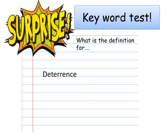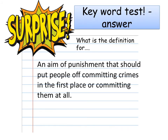Time for another keyword test: what is the definition for deterrence? Deterrence is an aim of punishment that should put people off committing crimes in the first place or committing them at all.